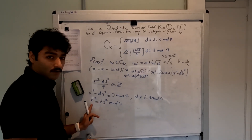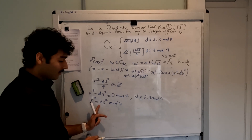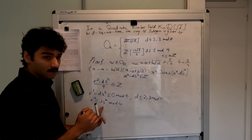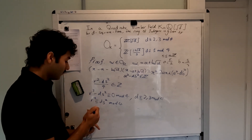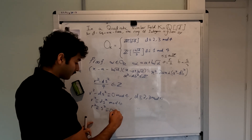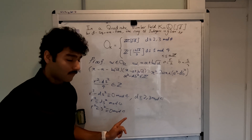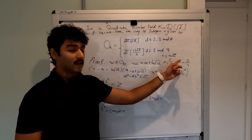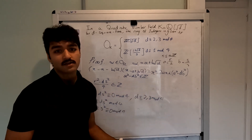Since r squared can only be 0 or 1 and s squared can also only be 0 or 1, for d congruent to 2 or 3 mod 4, the only solution is s squared congruent to 0 mod 4, as 2 and 3 are not squares modulo 4. Thus we get that r squared is congruent to s squared congruent to 0 mod 4. Since r squared and s squared are both congruent to 0 mod 4, both r and s must be even. Since a and b are of the form r over 2 and s over 2 where r and s are even, we get that a and b are integers.